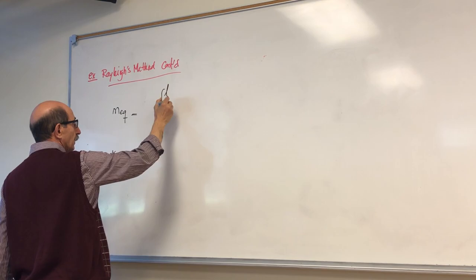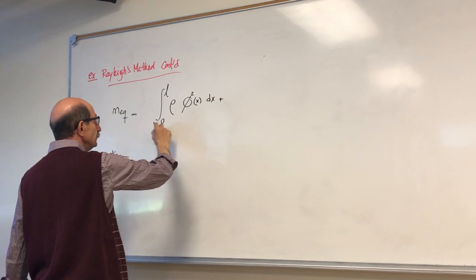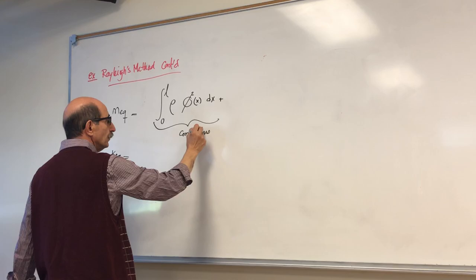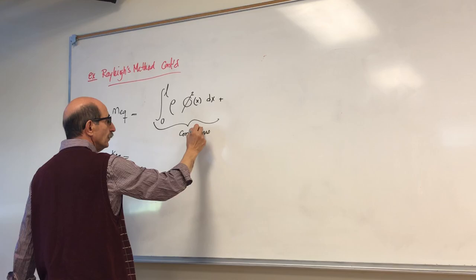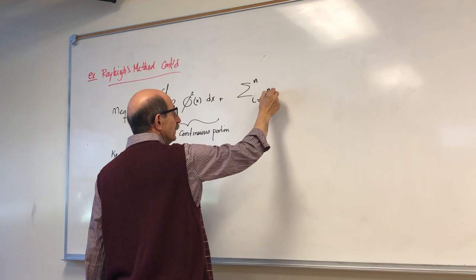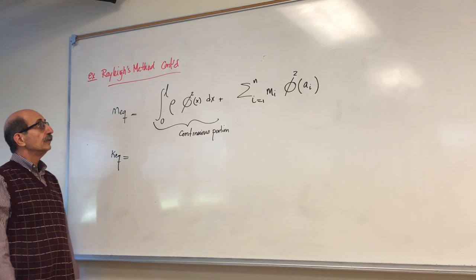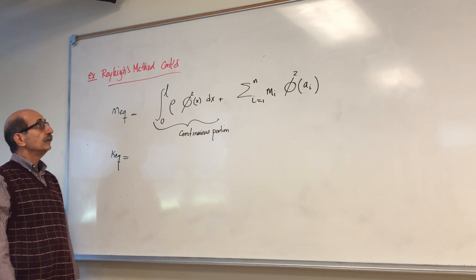For equivalent mass, you have the integral from 0 to 2L of rho times phi squared dx for the continuous portion — if you have a distributed mass — and for the lumped masses, if you have n number of lumped masses, you have m_i times the shape function evaluated at the location of each mass.